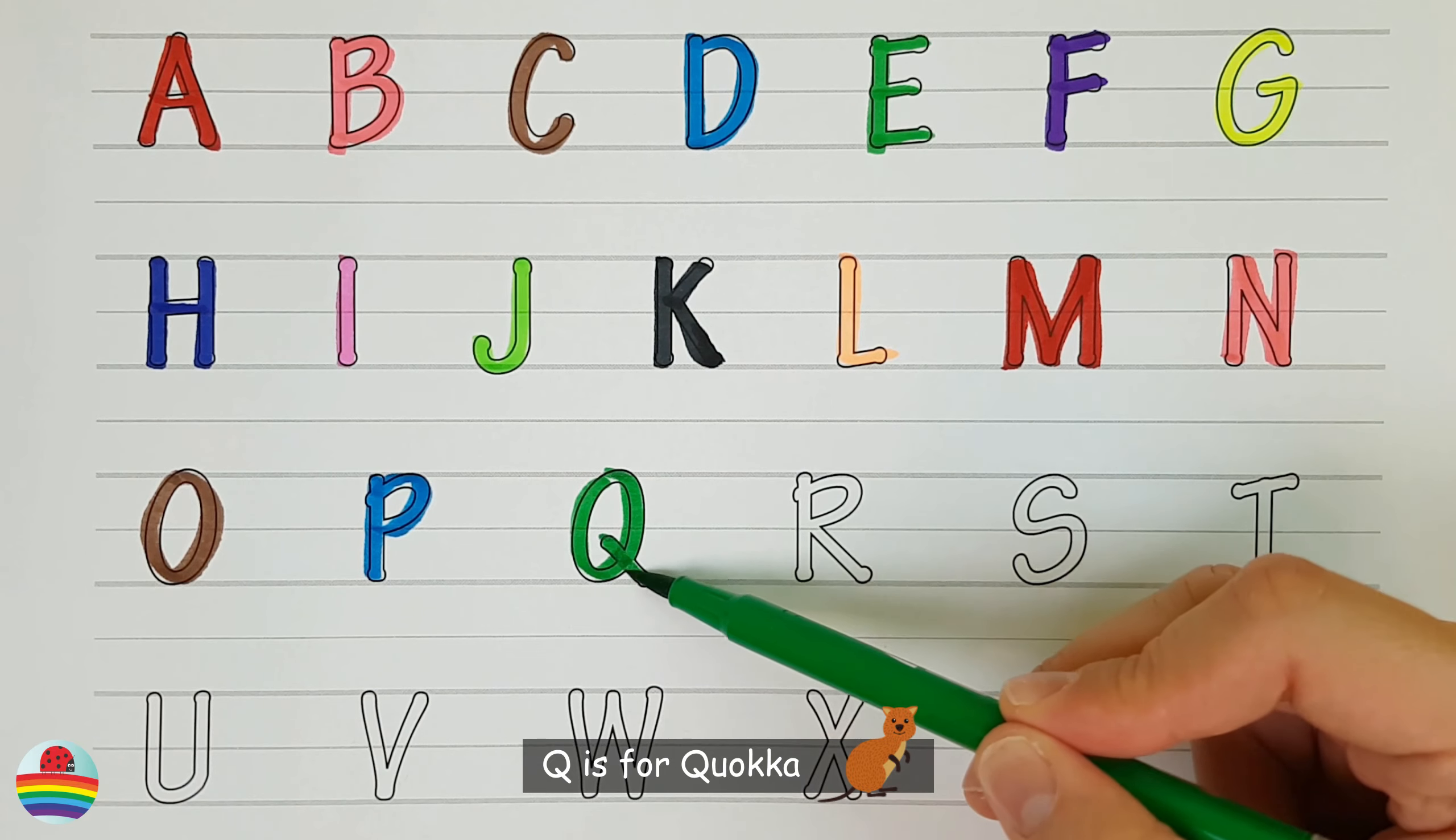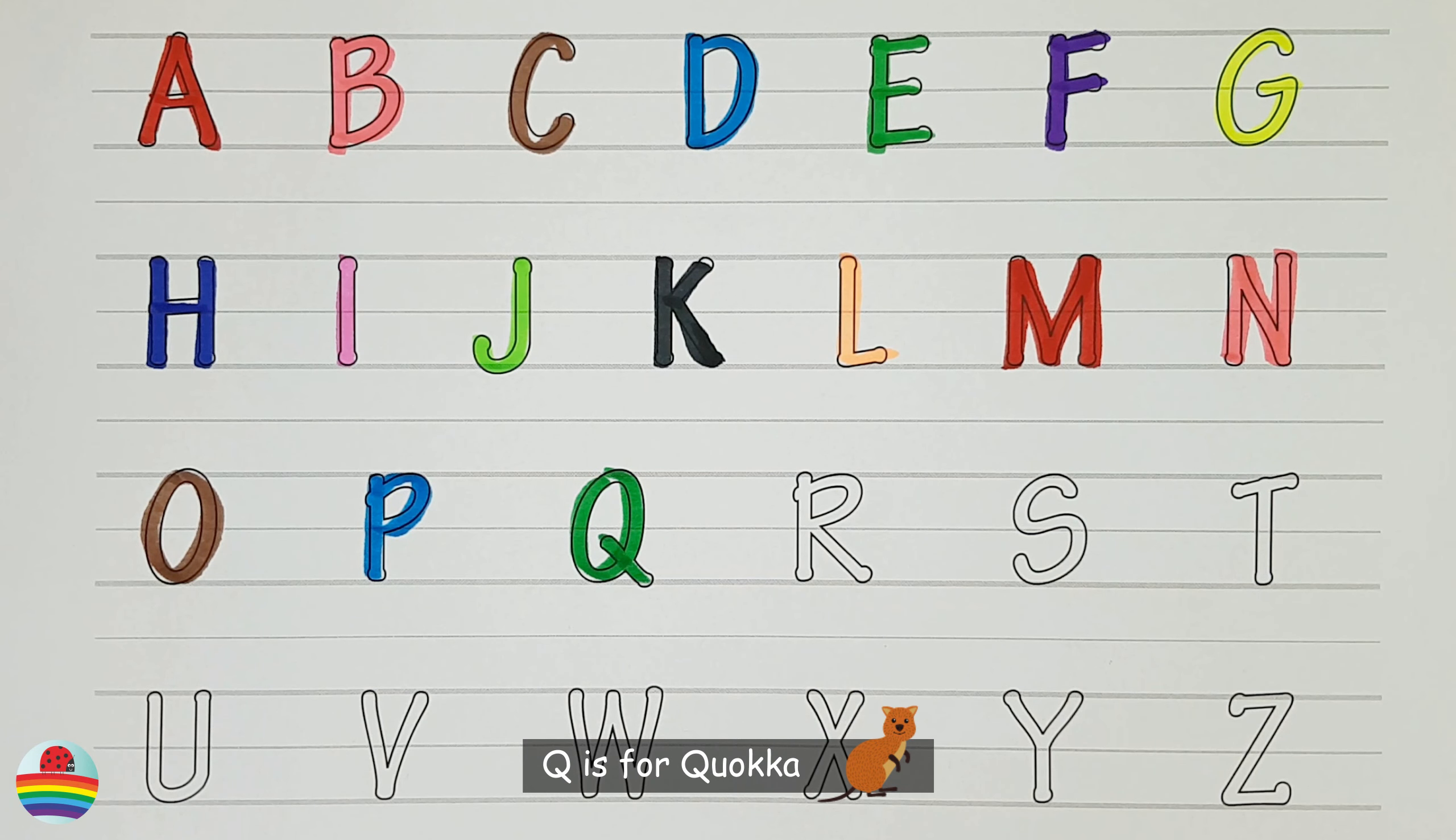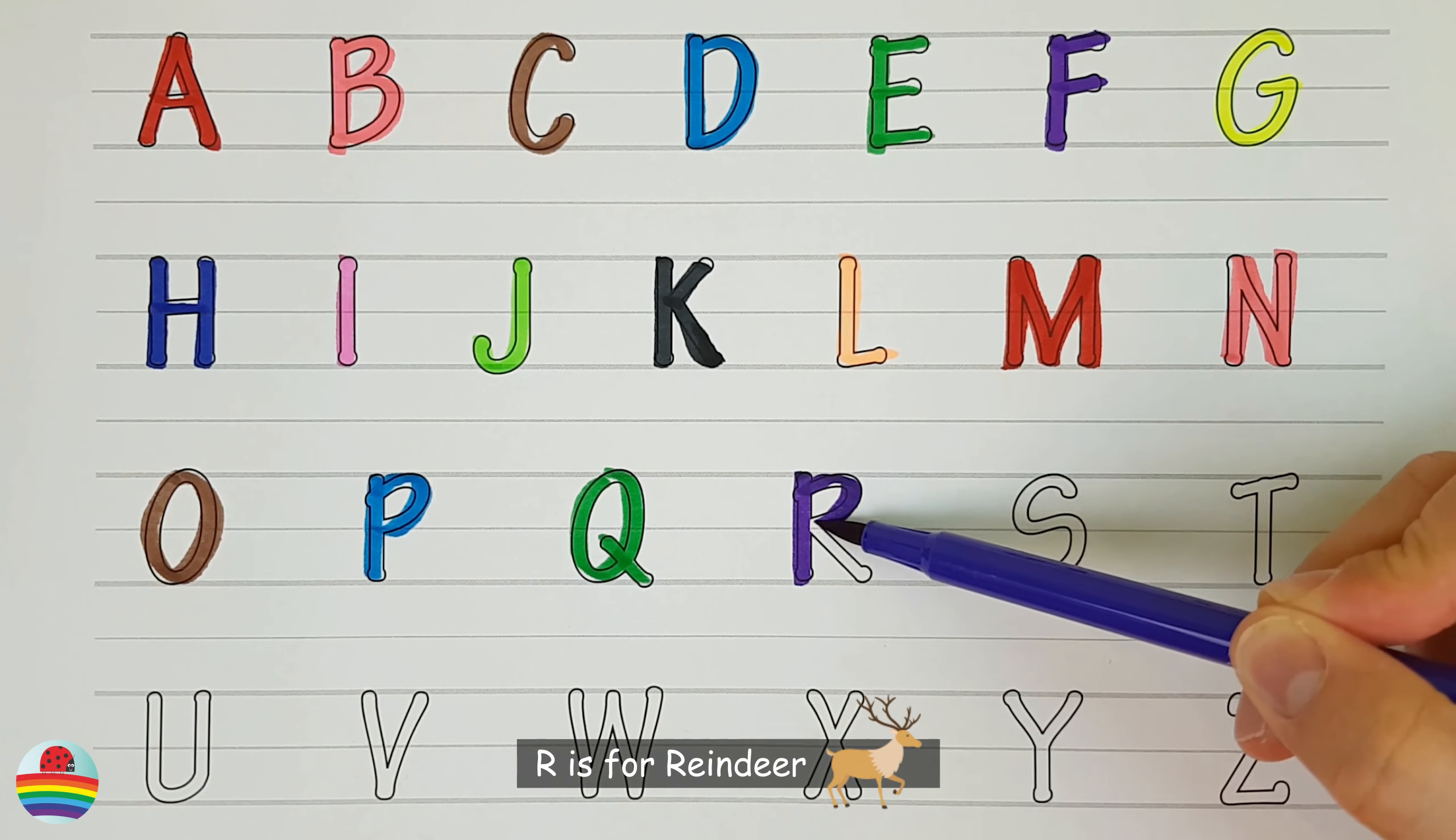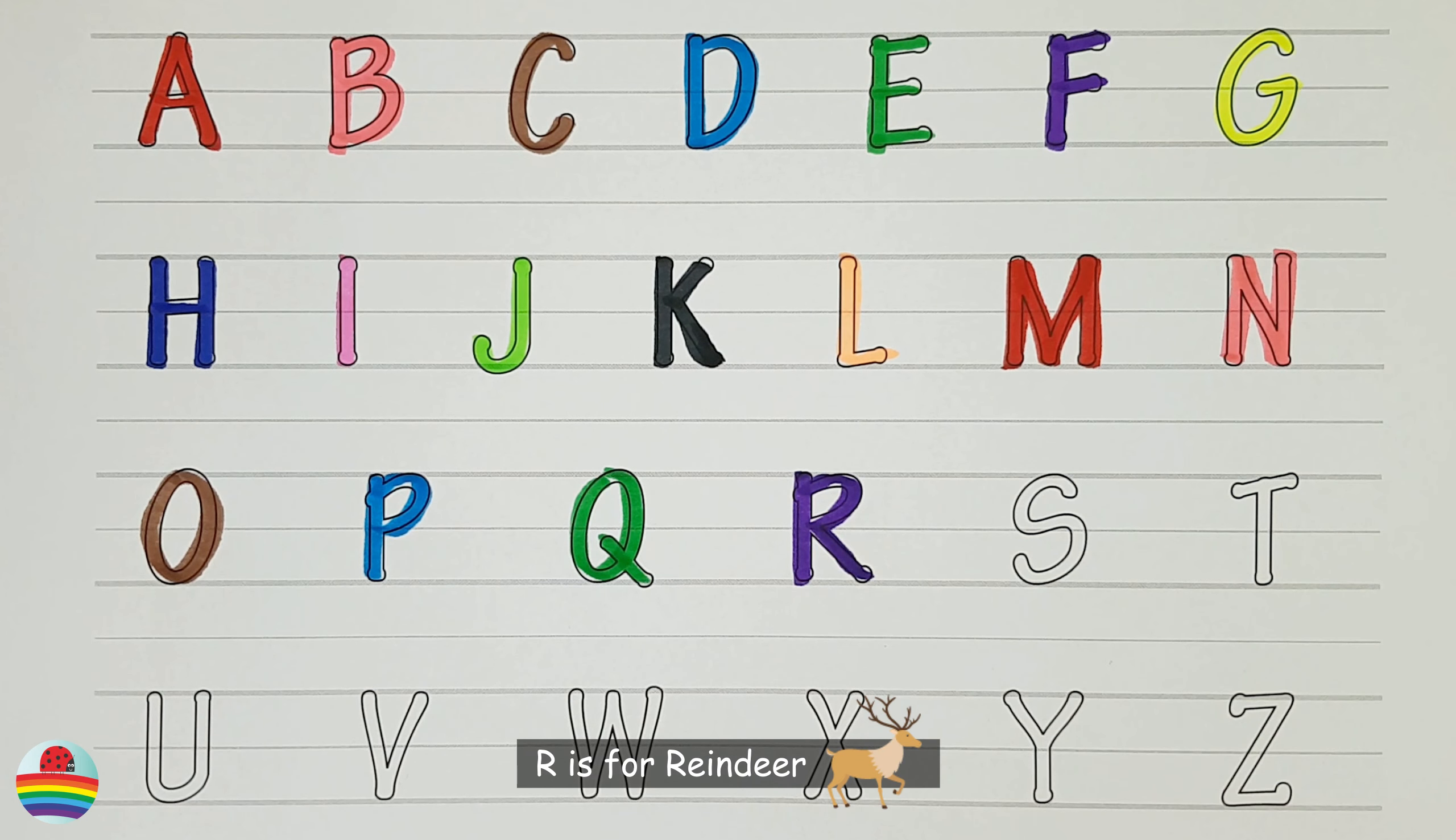O. O is for Ostrich. O. P. P is for Parrot. P.